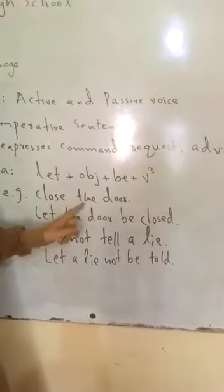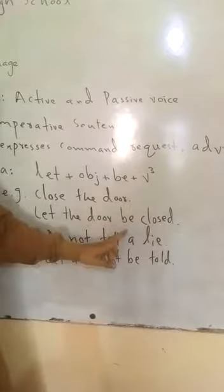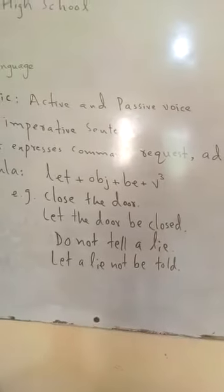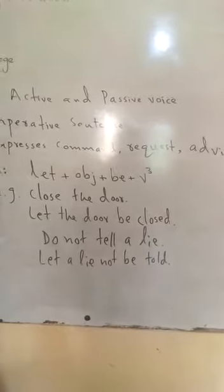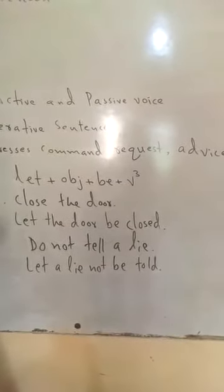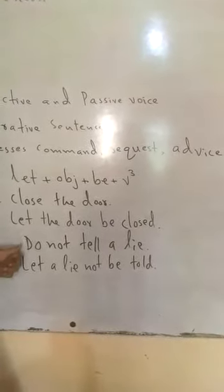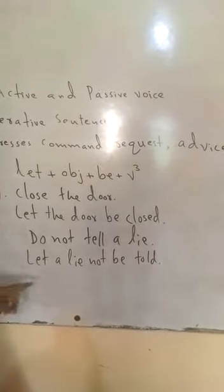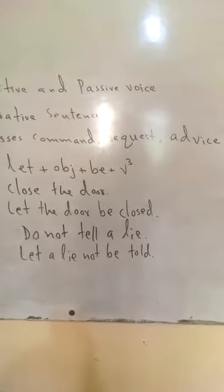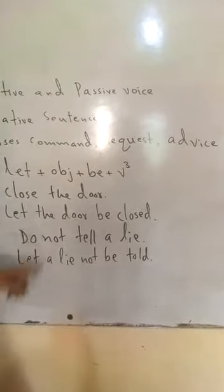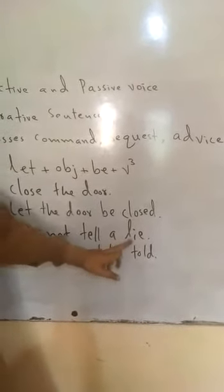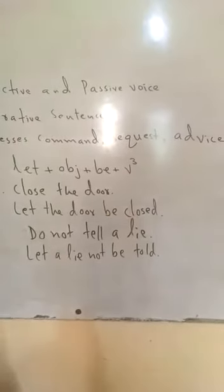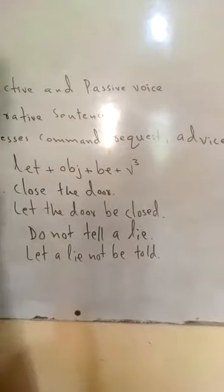The formula is: Let + object + be + third form of verb. For the negative imperative — for example, 'Do not tell a lie' — the passive formula becomes: Let + object + not + be + third form. So 'Do not tell a lie' becomes 'Let a lie not be told.'